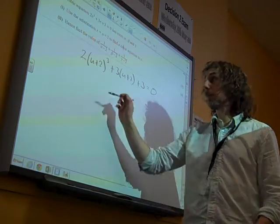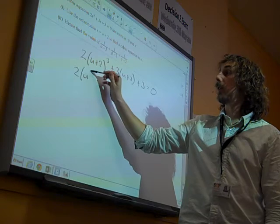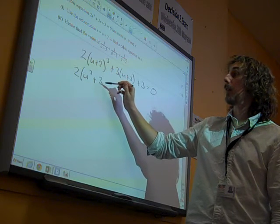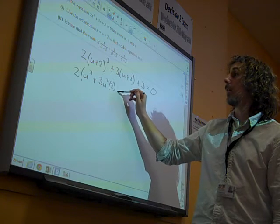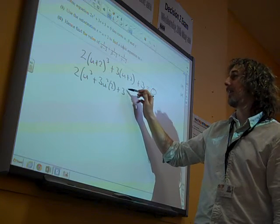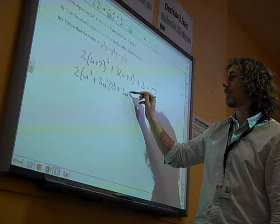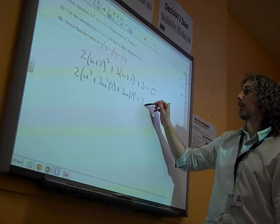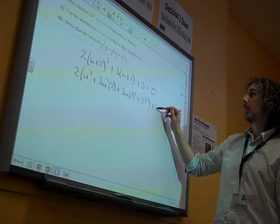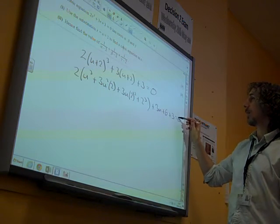So just be careful multiplying it out. 2 lots of u cubed plus 3 times u squared times 2 plus 3... I'm doing binomial expansion on to 3 times u times 2 squared plus 2 cubed plus 3u plus 6 plus 3 is 0.